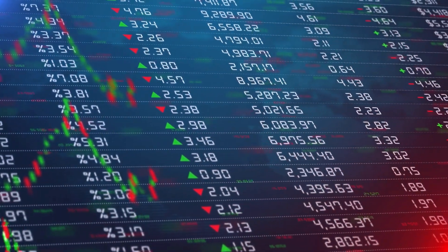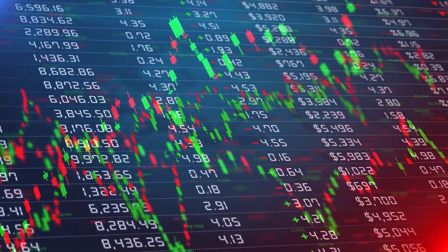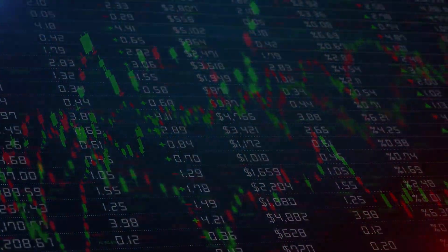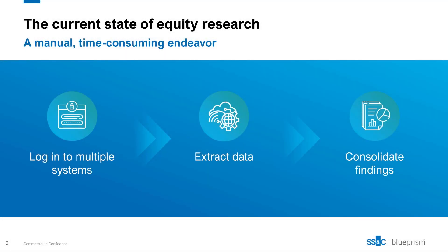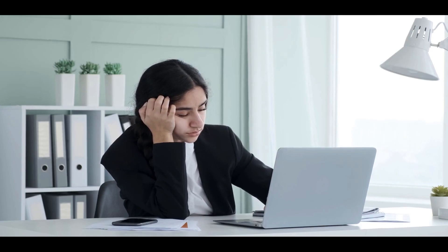Today, most equity analysts still create research reports through an inefficient manual process. The analyst starts by logging into various systems to extract data about the company and its competitors. They pull financial statements from one system, grab press releases and SEC filings from another, and then export charts and graphs from Excel. It's a repetitive process of clicking, copying, pasting, and it's very time consuming and prone to errors.